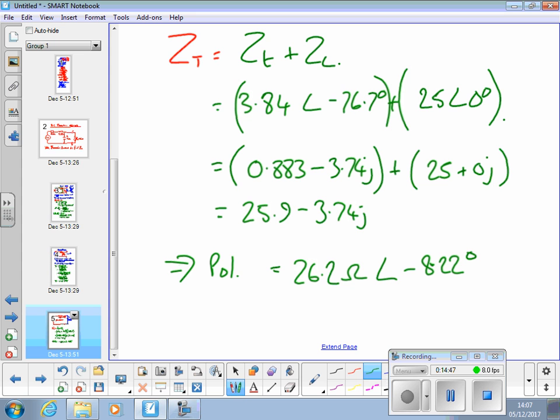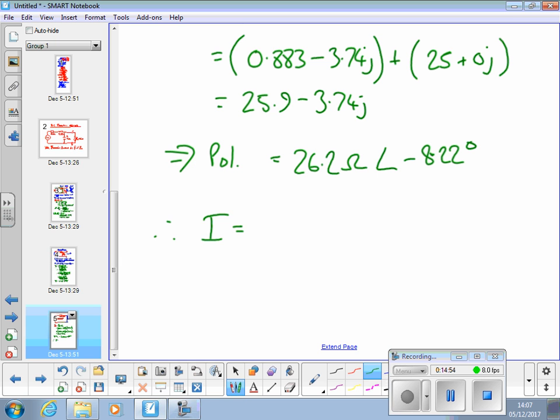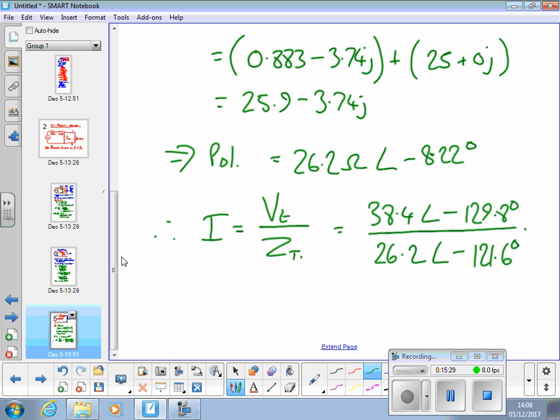If anyone disagrees with any of these figures, shout. And therefore, I is equal to V Thevenin's over that total impedance, which is 38.4 angle minus 129.8 degrees, divided by 26.2 angle minus 121.6 degrees. Final result, 1.47 amps angle minus 121.6 degrees.